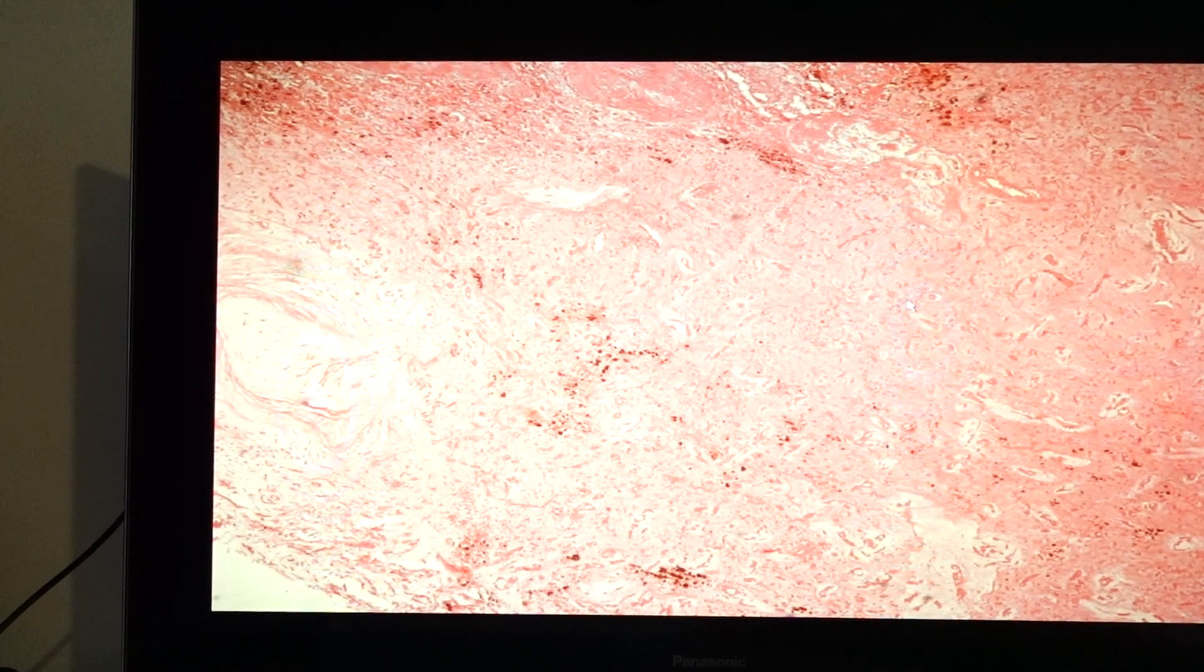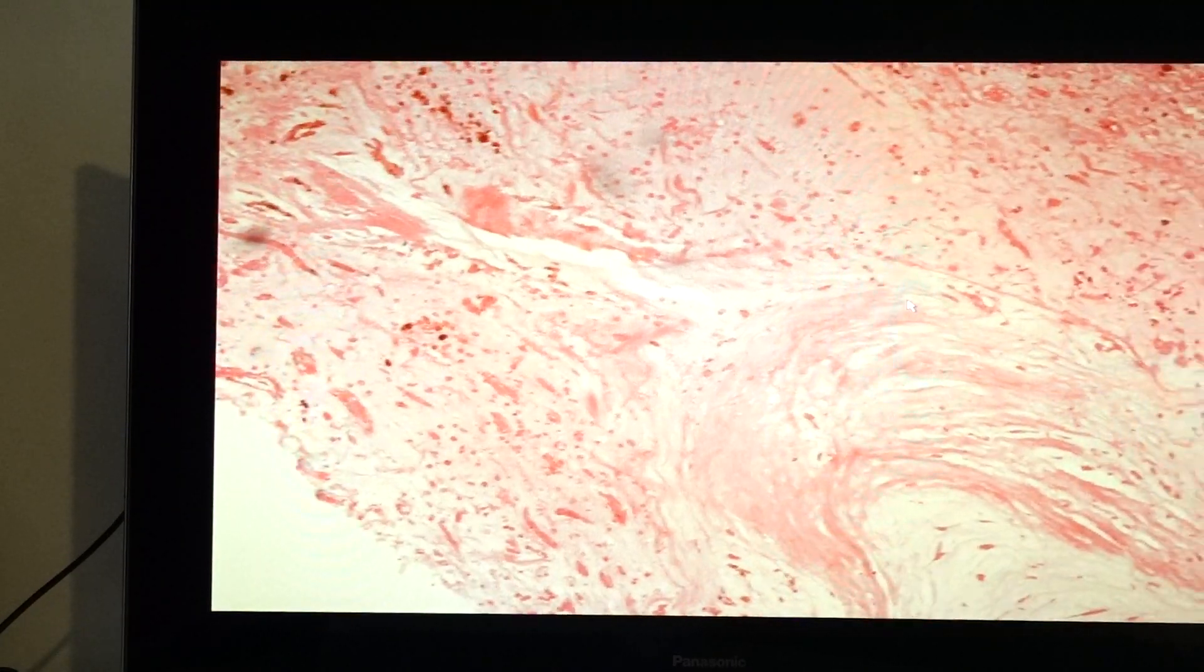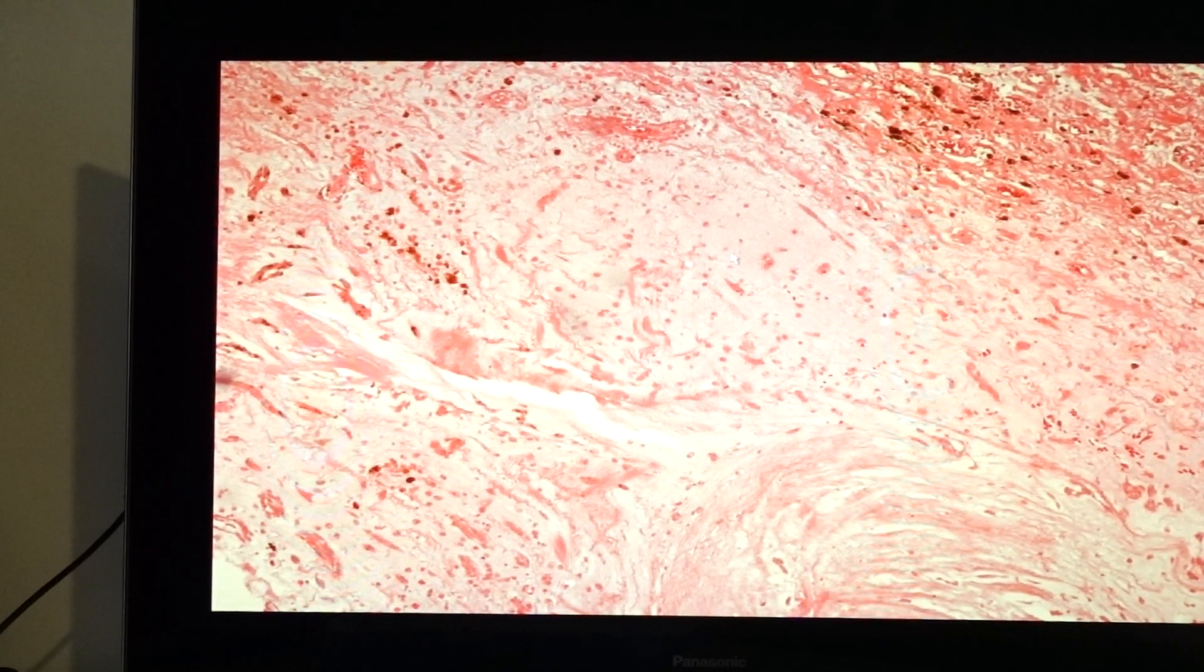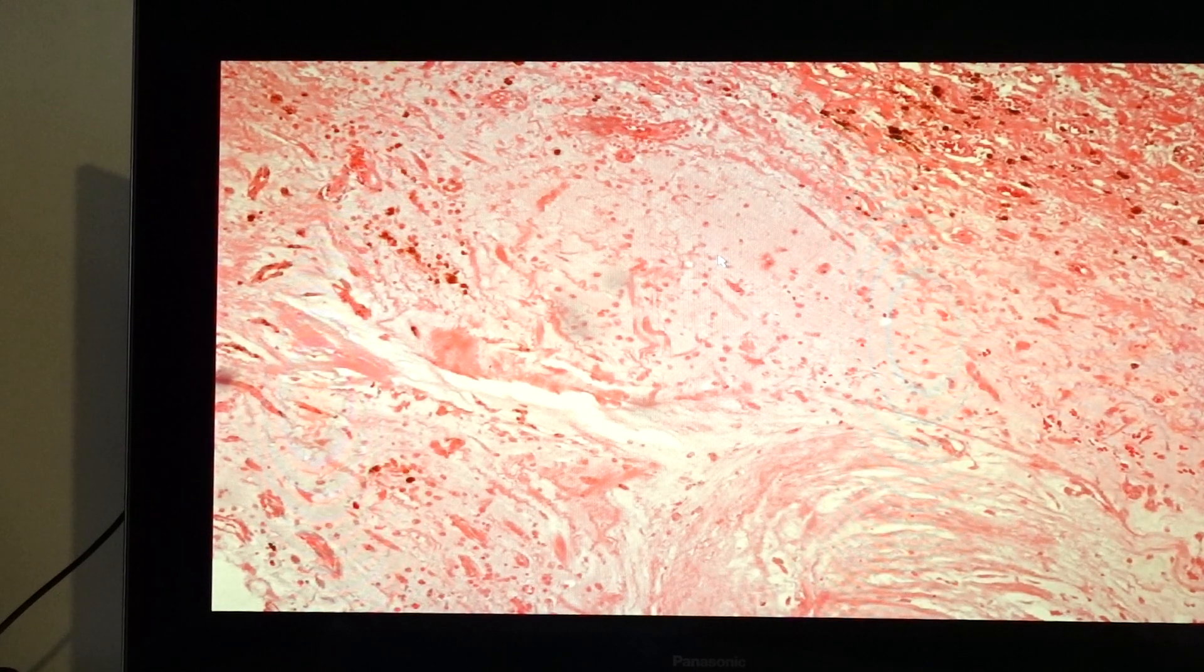The cardiac myxoma would be pedunculated, like a polyp, and it may cause a ball valve obstruction, causing a decrease in the cardiac output. What we see here, this particular mass would show a lot of the stroma, a lot of the substance. You can see the substance, and it is pink-blue in color. This is composed of mucopolysaccharide.